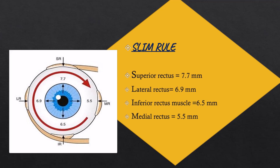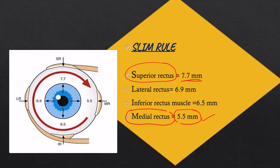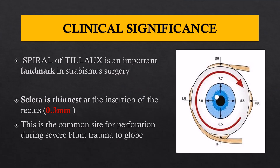A helpful mnemonic is the 'SLIM' rule: S (superior rectus) is farthest at 7.7 mm, L (lateral rectus) at 6.9 mm, I (inferior rectus) at 6.5 mm, and M (medial rectus) at 5.5 mm. Clinically, the spiral of Tillaux serves as a landmark in strabismus surgery, helping the surgeon locate a muscle by measuring its insertion distance from the limbus. Additionally, the sclera is thinnest at the rectus muscle insertions — about 0.3 mm — making this a common site of perforation during severe blunt trauma to the globe.